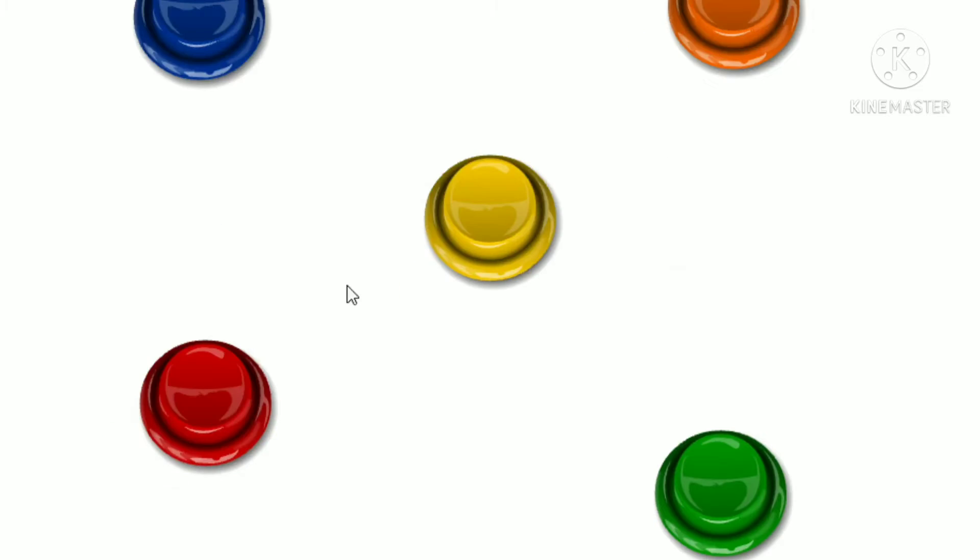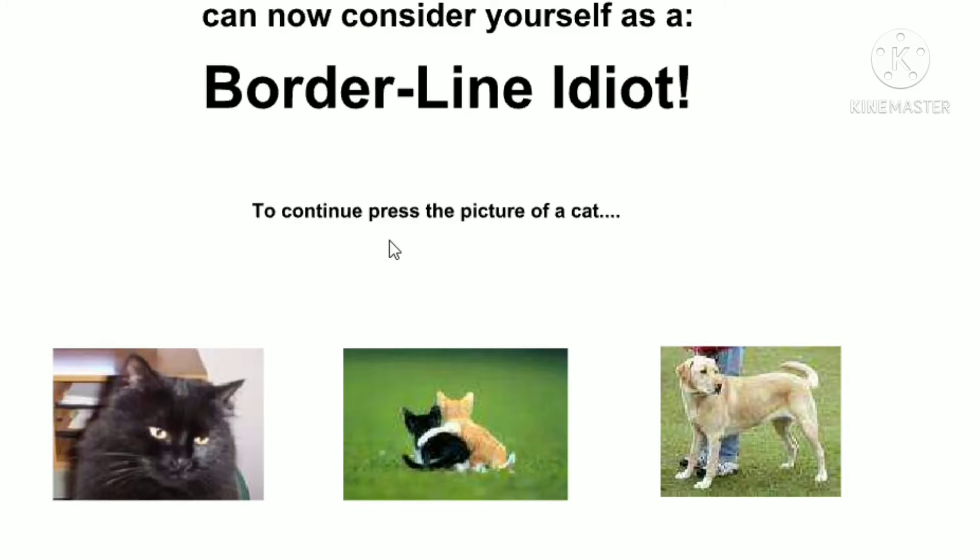One, two, three, four. Way to go! You passed the first level. You can now consider yourself as a borderline idiot.